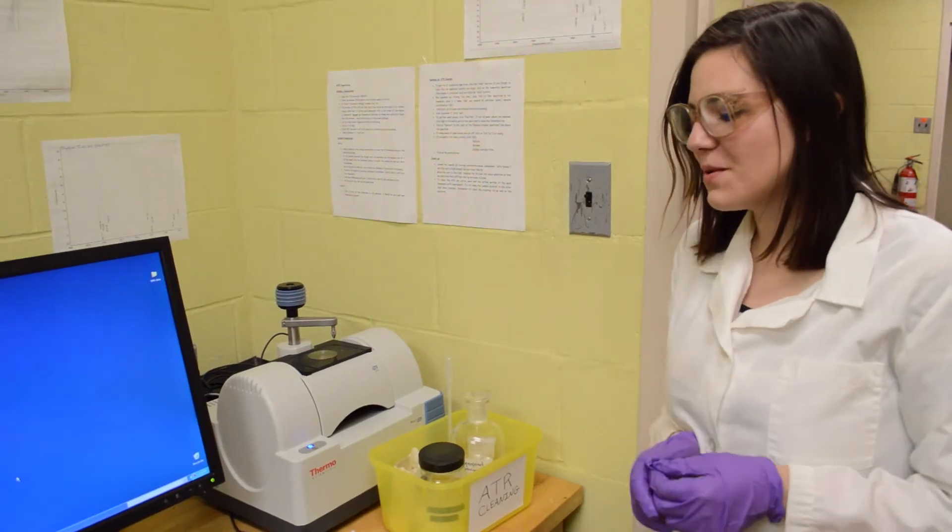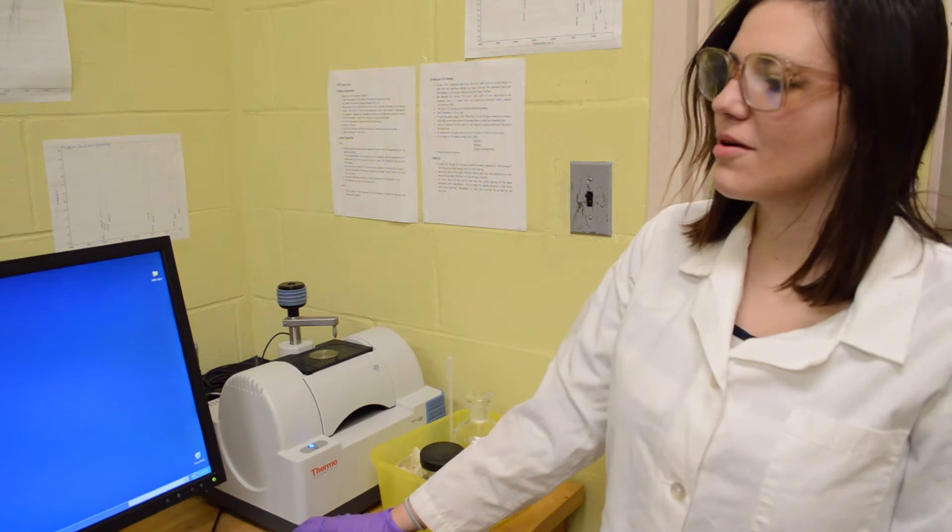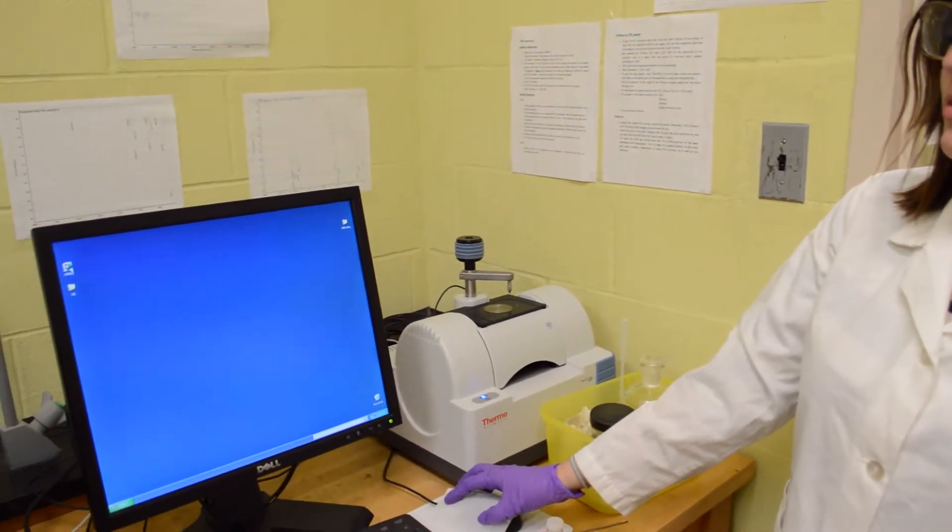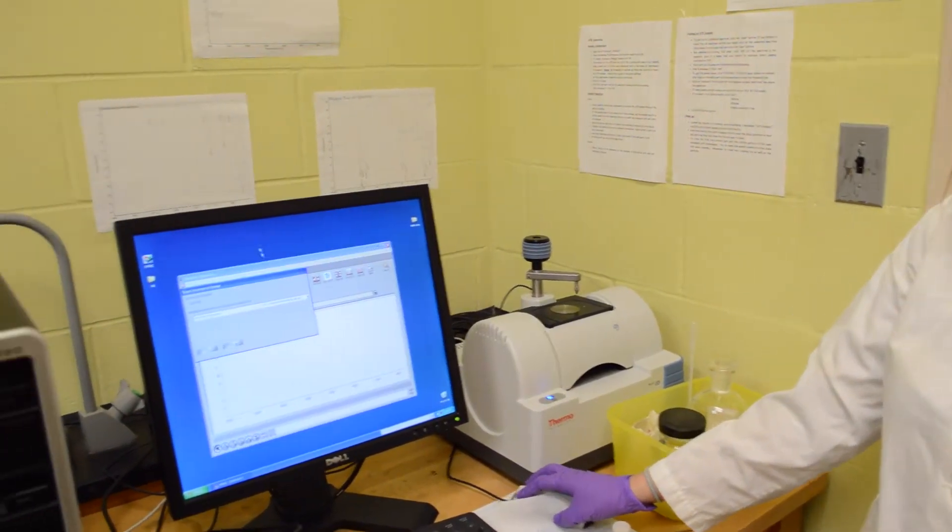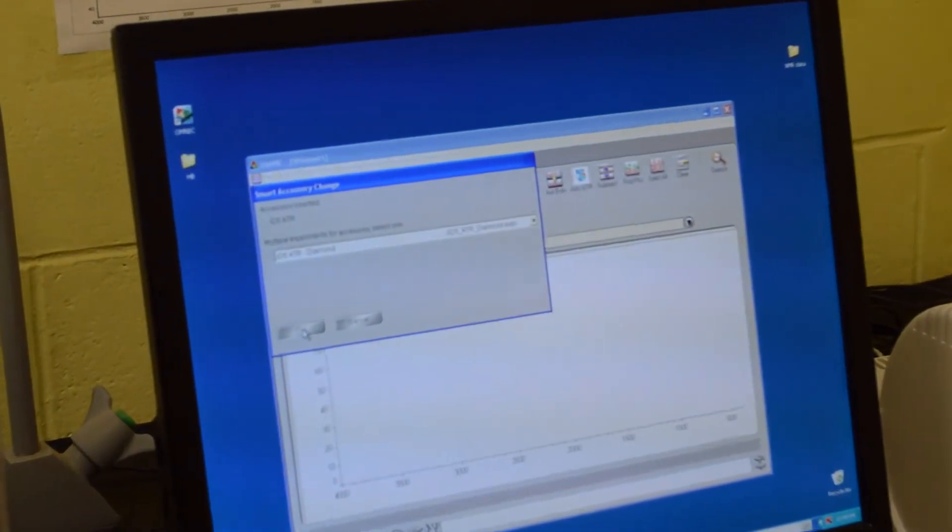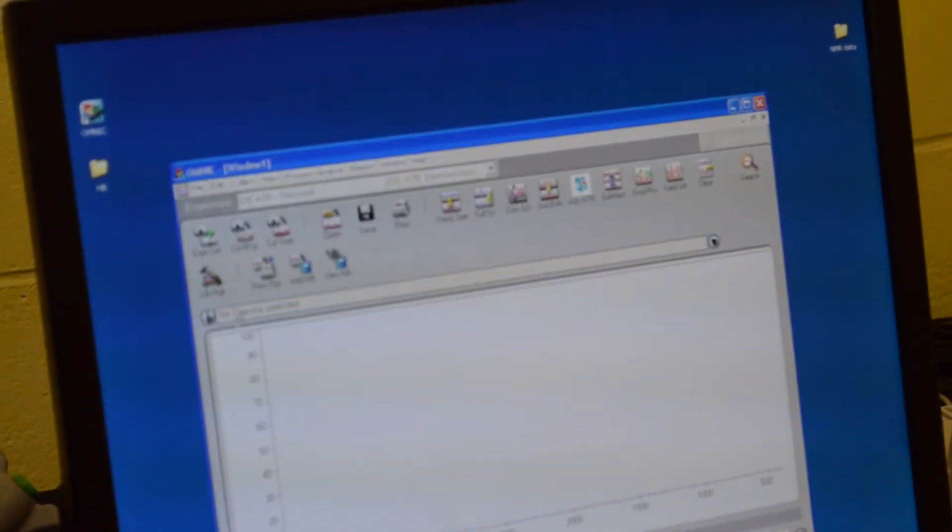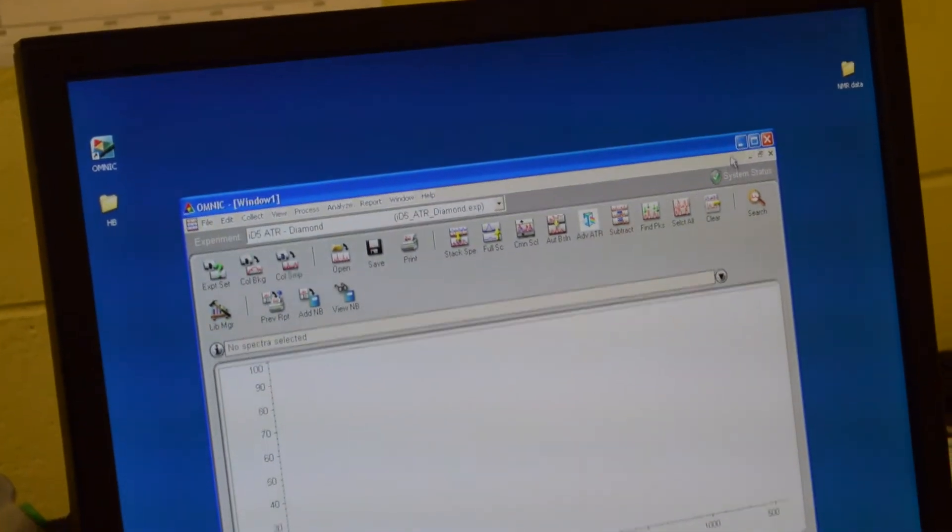So the first thing you're going to want to do is turn on the Omnic program. Just double click it on the computer right here. This will come up and it's just saying that you're using ATR so you press OK and maximize the window.